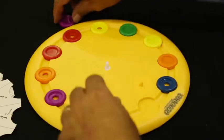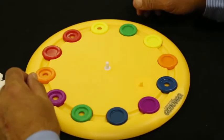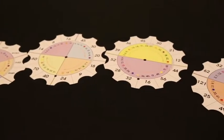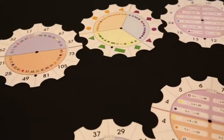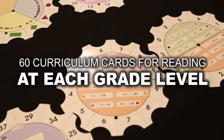Learning Palette works using the Learning Palette base, 12 color disks, and a wide array of curriculum cards. There are 72 different cards per grade for math and 60 different cards per grade for reading.